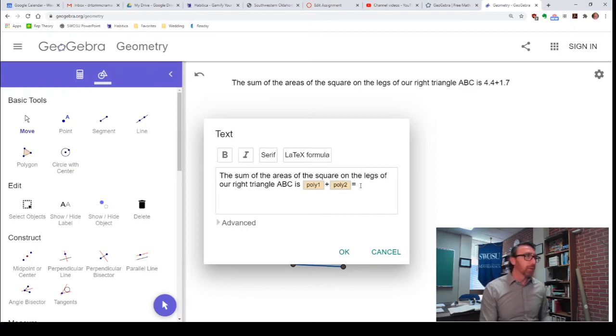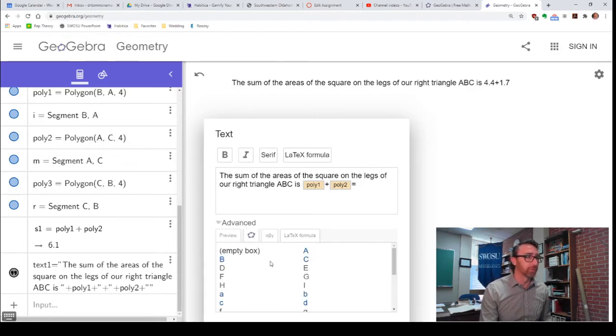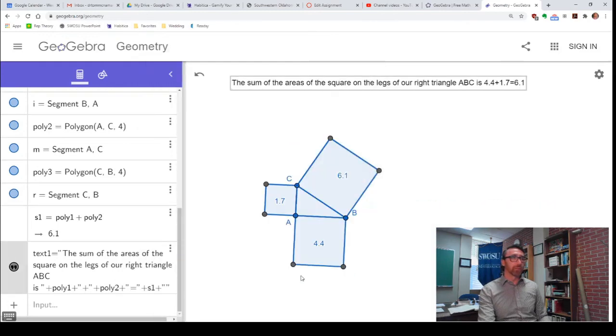So, let me go and edit this a little bit more. Equals. Now, this is the reason I had to go into the Algebra window and put this new variable in here. You can't really do computations in the text, but you can do it here in the Algebra pane. So, equals, and let me go and I'll just select S1 off of this list. Oh, my OK button is way down there.